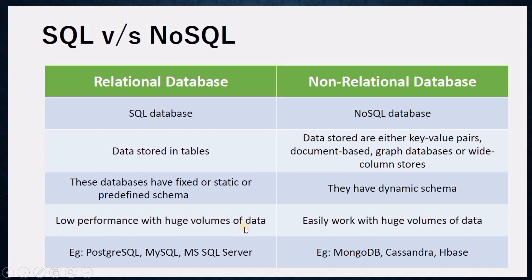Examples of relational databases are PostgreSQL, MySQL, and MS SQL Server. Examples of non-relational databases include MongoDB, Cassandra, and HBase. SQL is a relational database and NoSQL is a non-relational database. These are the differences between relational and non-relational databases, SQL and NoSQL databases.